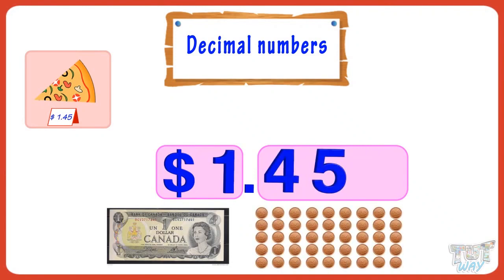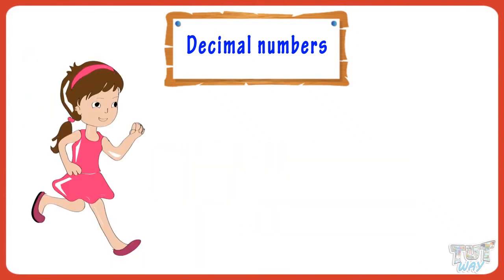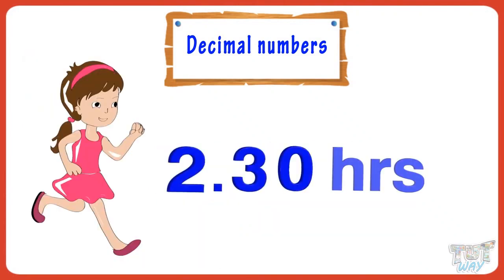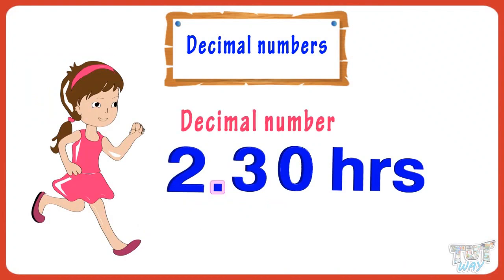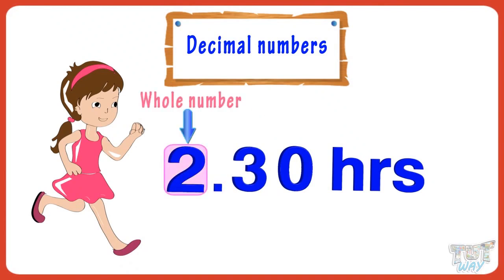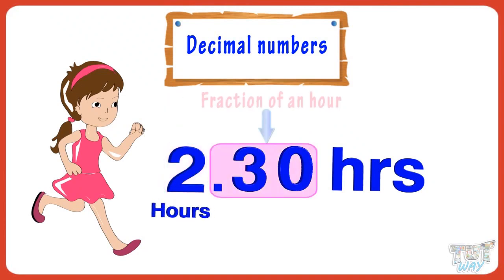Let's take another example. Dan won the marathon by completing it in two point thirty hours. It is a decimal number, where two is a whole number representing two hours, and point thirty is a fraction of an hour.